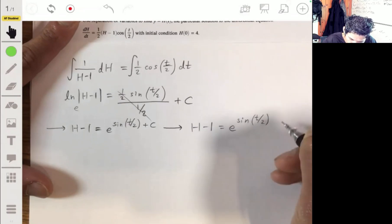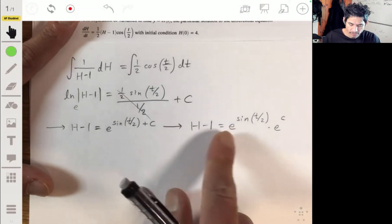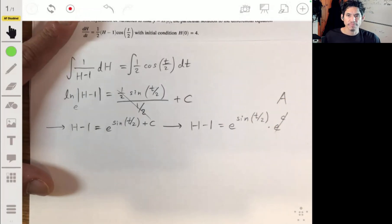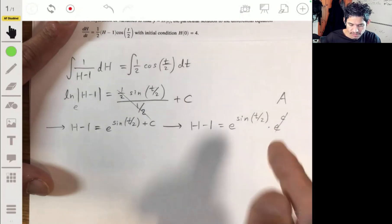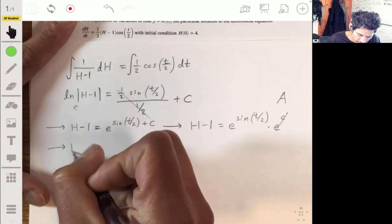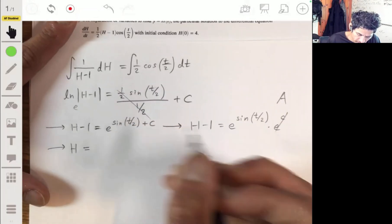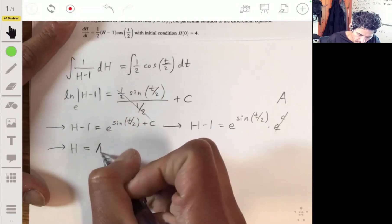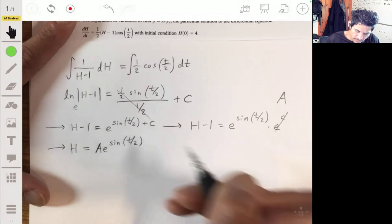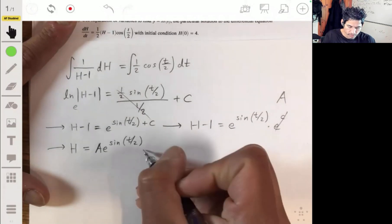So then we would get h minus one is equal to e to the sine of t over two plus c. We can rewrite this as h minus one equal to e to the sine of t over two times e to the c. Let's add the one and let's rewrite e to the c as a constant coefficient. Let's just use a, because remember e is some number, like 2.71 ish, and c is some number. So this will just be some number. So then we'll have h is equal to a e to the sine of t over two plus one, plus one.